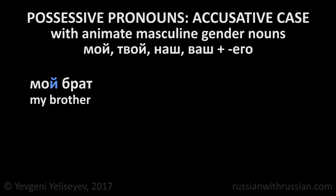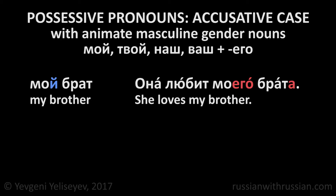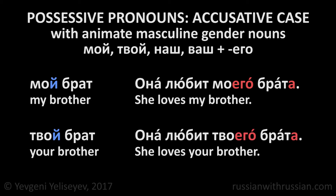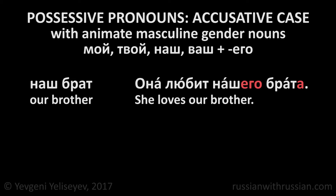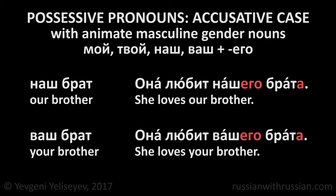For example: мой брат – my brother. Она любит моего брата – she loves my brother. Твой брат – your brother. Она любит твоего брата – she loves your brother. Наш брат – our brother. Она любит нашего брата – she loves our brother. Ваш брат – your brother. Она любит вашего брата – she loves your brother.